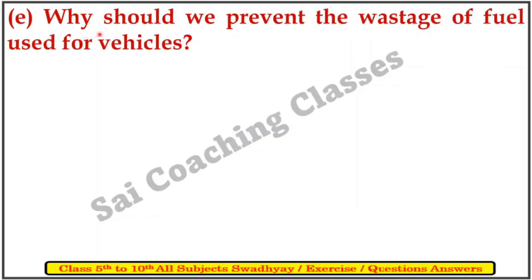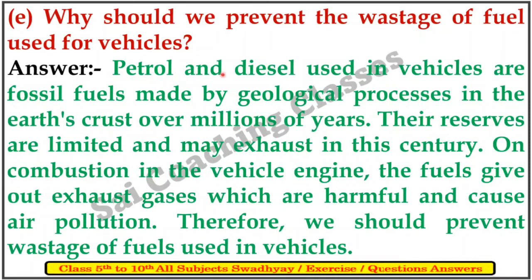E. Why should we prevent the wastage of fuel we use for vehicles? Answer: Petrol and diesel used in vehicles are fossil fuels made by geological processes in the earth's crust over millions of years. Their resources are limited and may be exhausted in this century. On combustion in the vehicle engine, the fuel gives out exhaust gases which are harmful and cause air pollution. Therefore, we should prevent wastage of fuels used in vehicles.